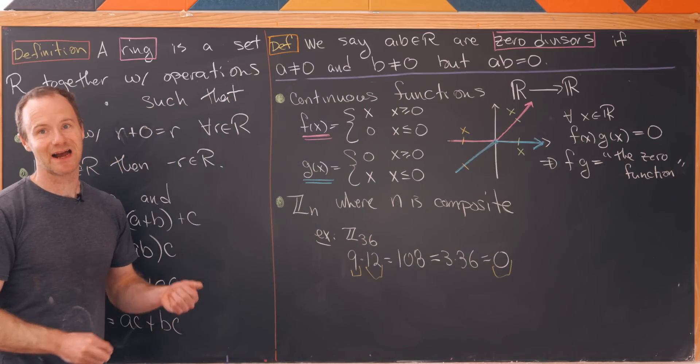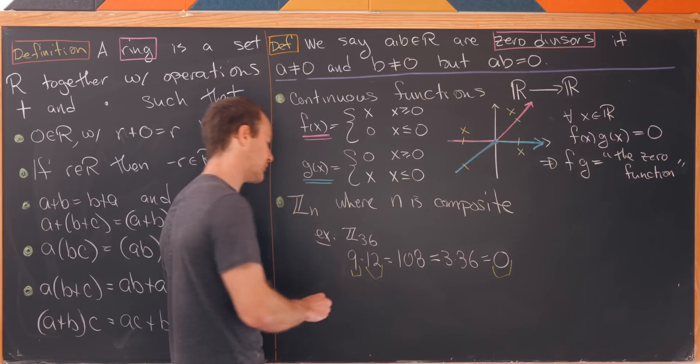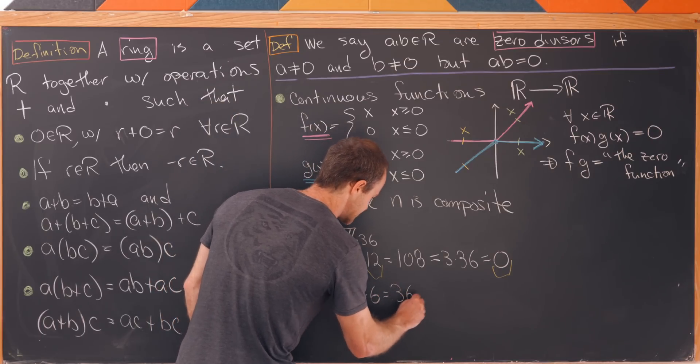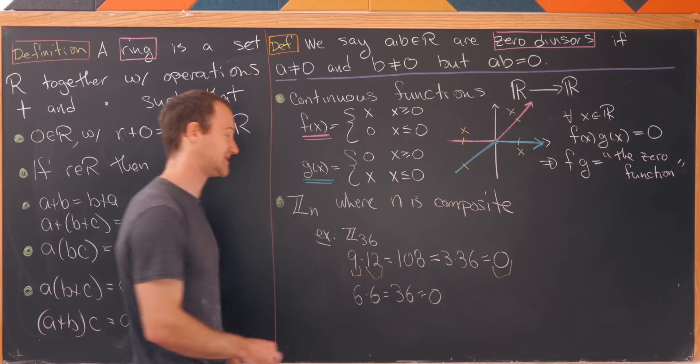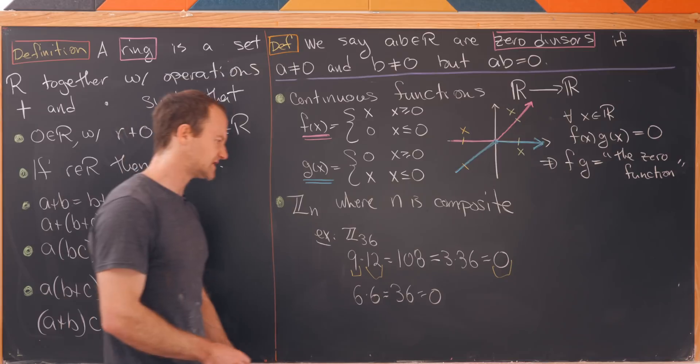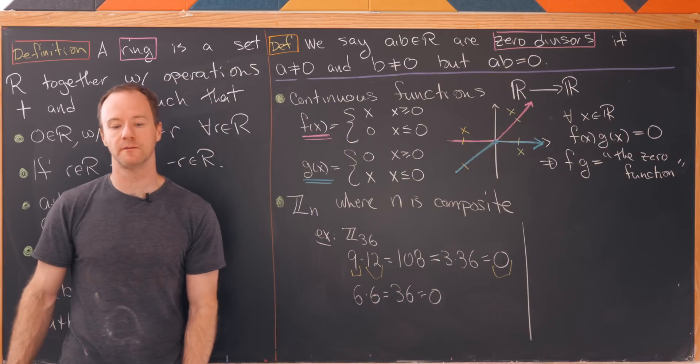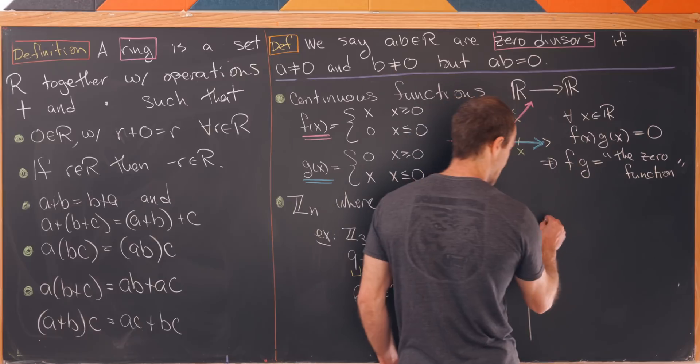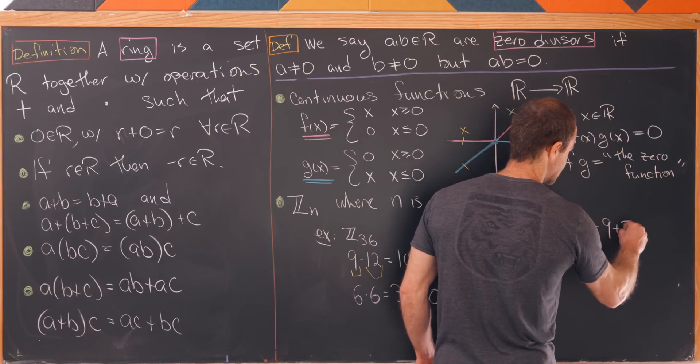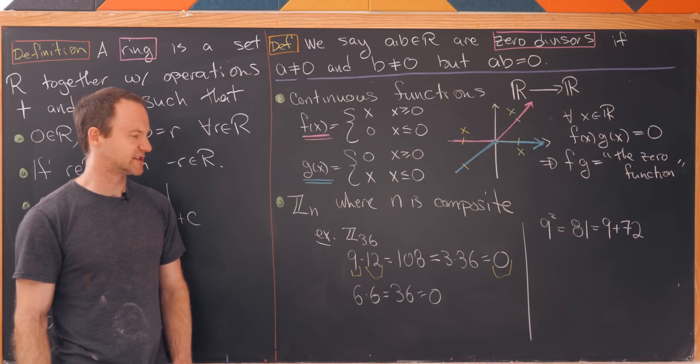So we've done it. We have 9 which is non-zero, 12 which is non-zero but they multiply together to be zero. That means 9 and 12 are zero divisors. Now of course we've got a bunch more as well. Notice that 6 times itself is 36 which is equal to zero. That means 6 is also a zero divisor. Let's also notice that there is some other weirdness that occurs in here as well.